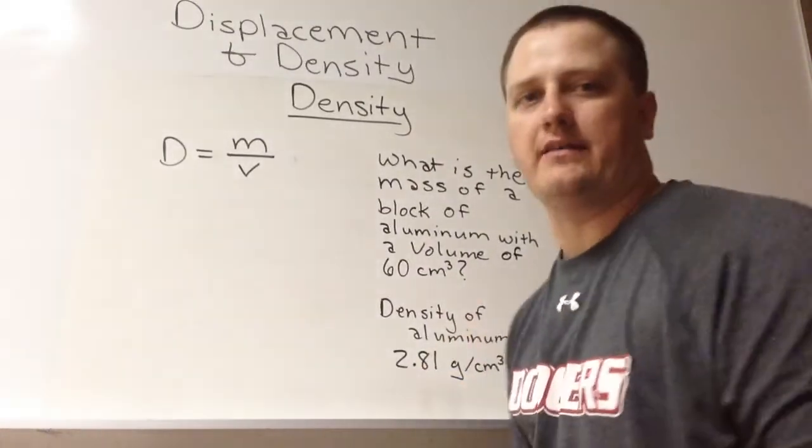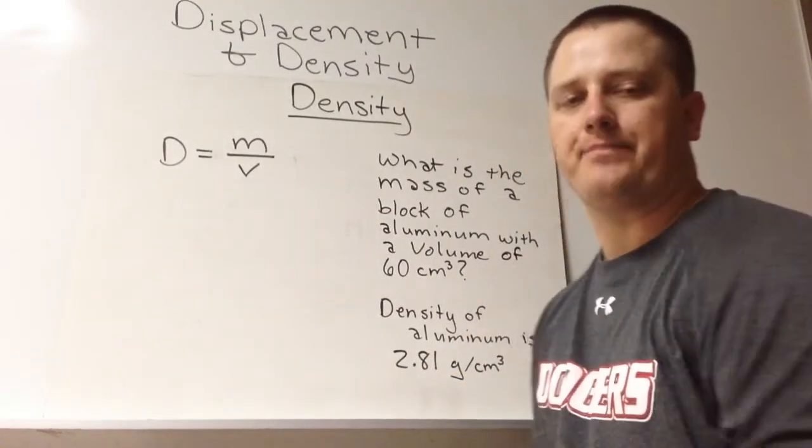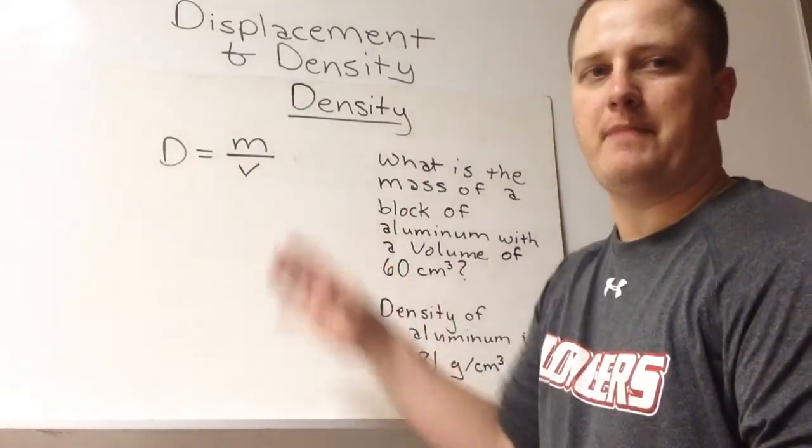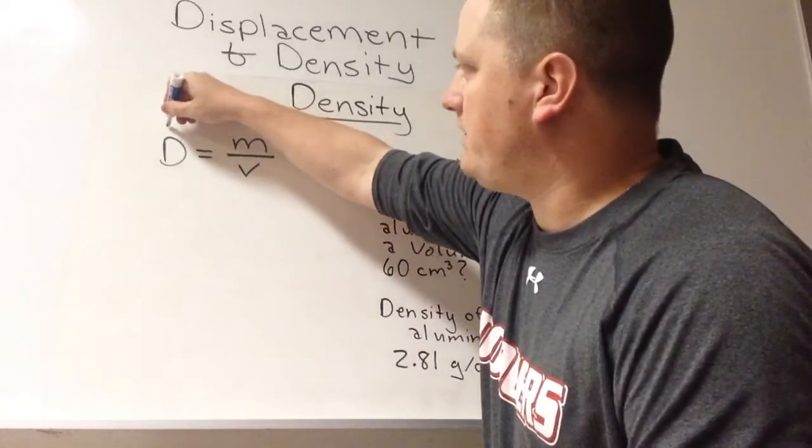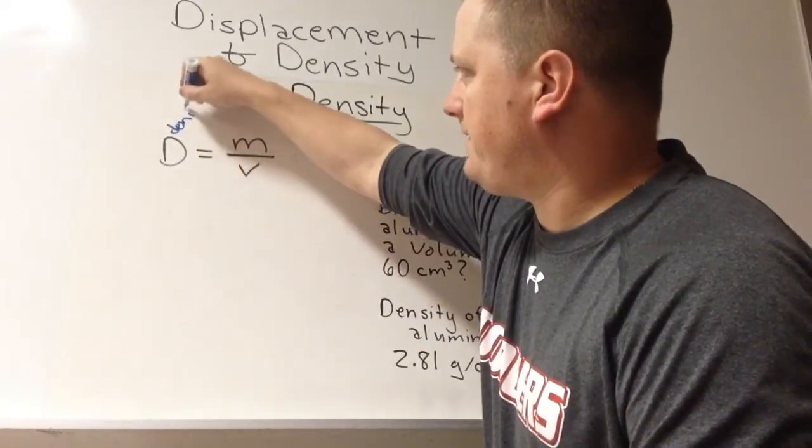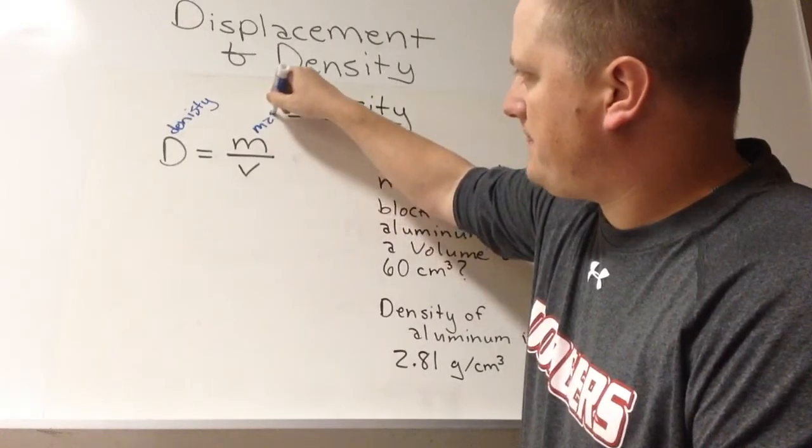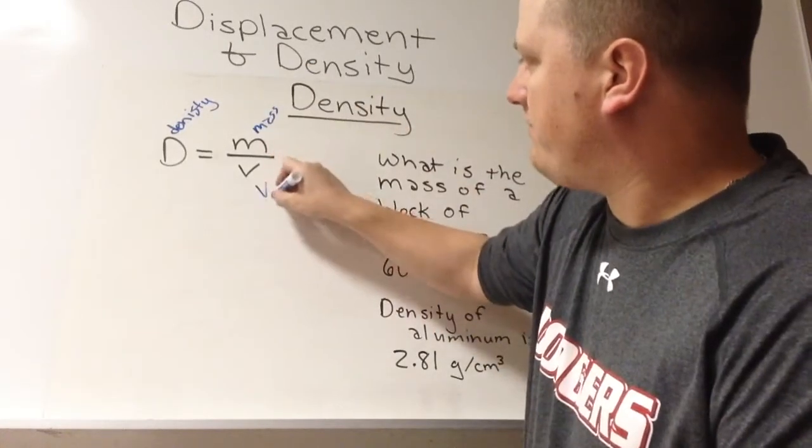We also want to look at something called density. Density is found with this mathematical equation. D stands for density, M stands for mass, and V stands for volume.